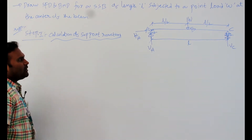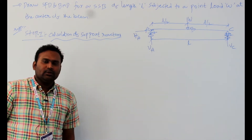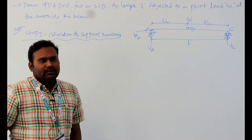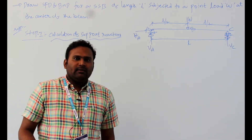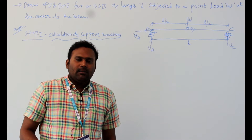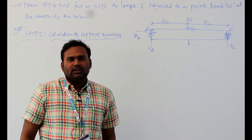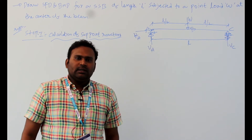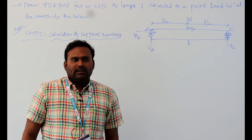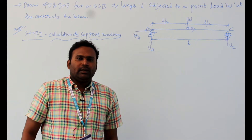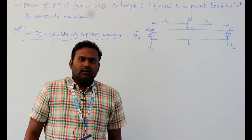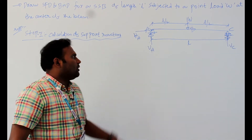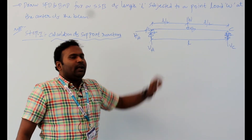For the calculation of support reactions, we use the equilibrium equations. For a structure in equilibrium, there are three equations: the sum of all horizontal forces equals zero, the sum of all vertical forces equals zero, and the sum of all moments about a point equals zero. We will use these three equations to find VA, HA, and VC.